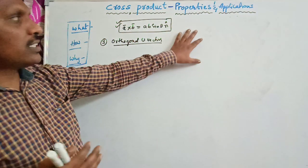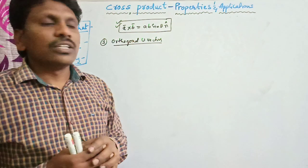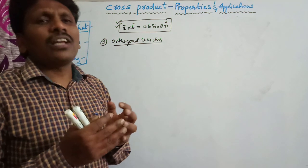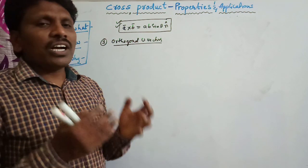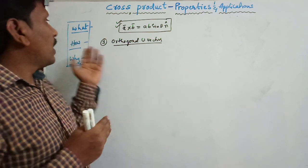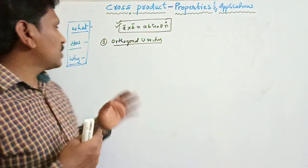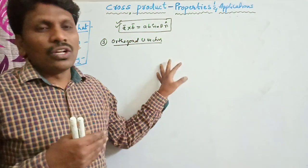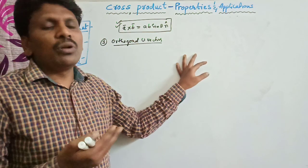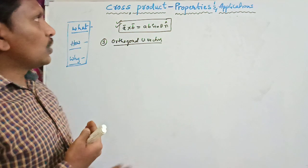Now I would like to explain the properties according to the same points — what, how and why. So what does the property tell us? Property means characteristics. What are the characteristics of the cross product or vector product? How many properties are there? That we are going to see. And why should we use these properties? So that we can simply understand the problems. These properties will be used for problem solving purposes. Now let us go through them one by one.